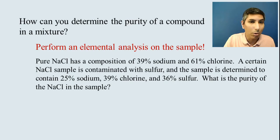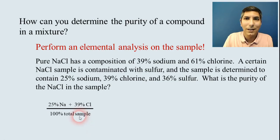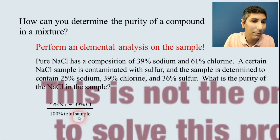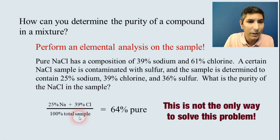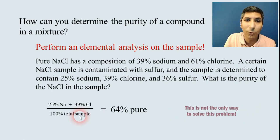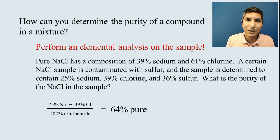In this case, we just take the total of the components that should be there, the sodium and the chlorine, and divide it by the 100% of the sample. So when you add that up and divide by 100, you find that it is 64% pure. And so we can use elemental analysis like this to determine the purity of a compound in a mixture.